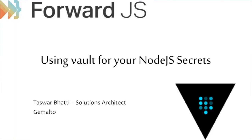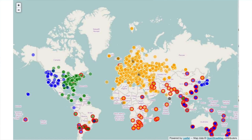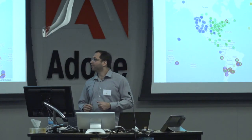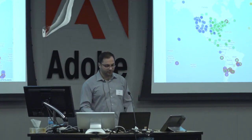Hi everybody. I wanted to start with: did you know that 76% of people internationally use social media like Facebook and other apps? They're using the internet for that. And guess what? Everybody has a secret. Most of you have a secret too. So this topic is about Node.js and secrets.